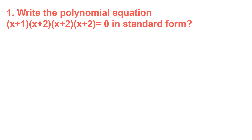Example number 1: write the polynomial equation (x+1)(x+2)(x+2)(x+2) = 0 in standard form. In writing polynomial equations from factored form into standard form, what you can do is to multiply all the factors. You cannot multiply them all at the same time, so multiply one factor with another first, then multiply the result by the remaining factors.